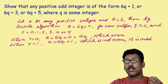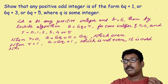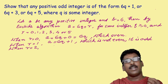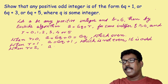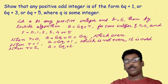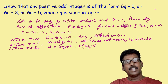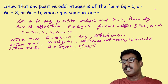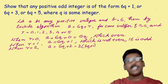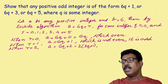Now, what about when r is equal to 2? A is equal to 6q plus 2. You can write it as 2 taken as common, that is 2 into (3q plus 1). So it is a multiple of 2, which means it is divisible by 2. So we can write: which is even.